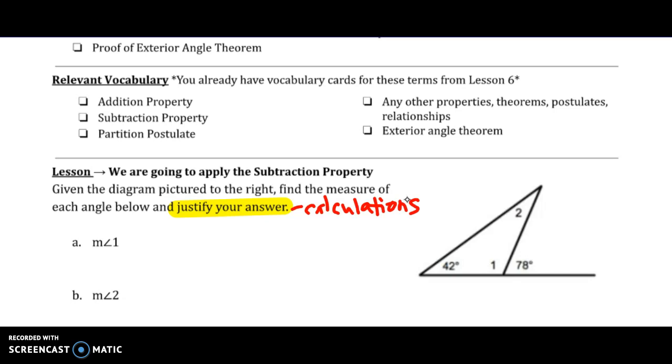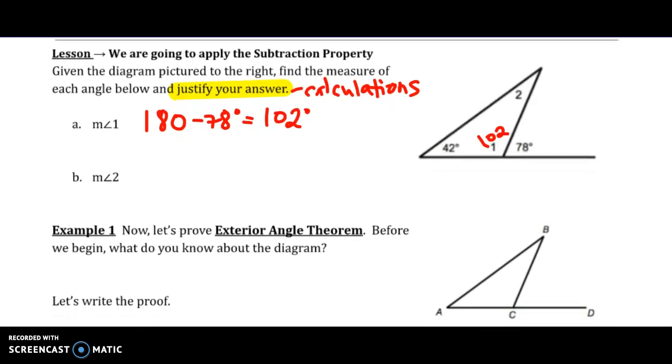So we're going to find the measure of each angle. I noticed that angle 1 and the 78-degree angle are a linear pair, meaning they are supplementary, so 180 minus 78 degrees gives me 102 degrees.